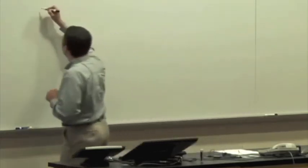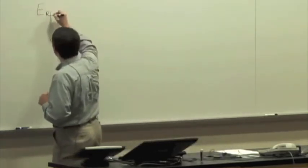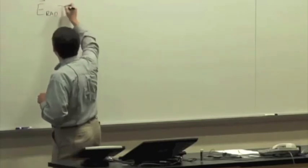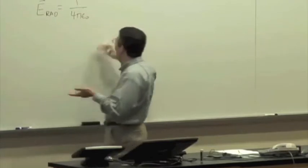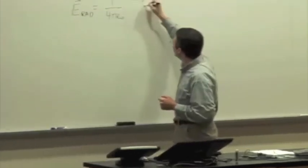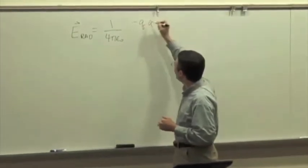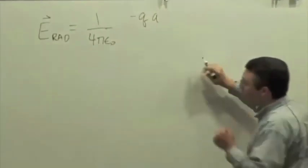Last time we were talking about electromagnetic radiation and radiation due to accelerated charges. We were talking about this formula we introduced and we were just playing around trying to get the directions correct for this radiative component to the electric field that is emitted by accelerated charges.